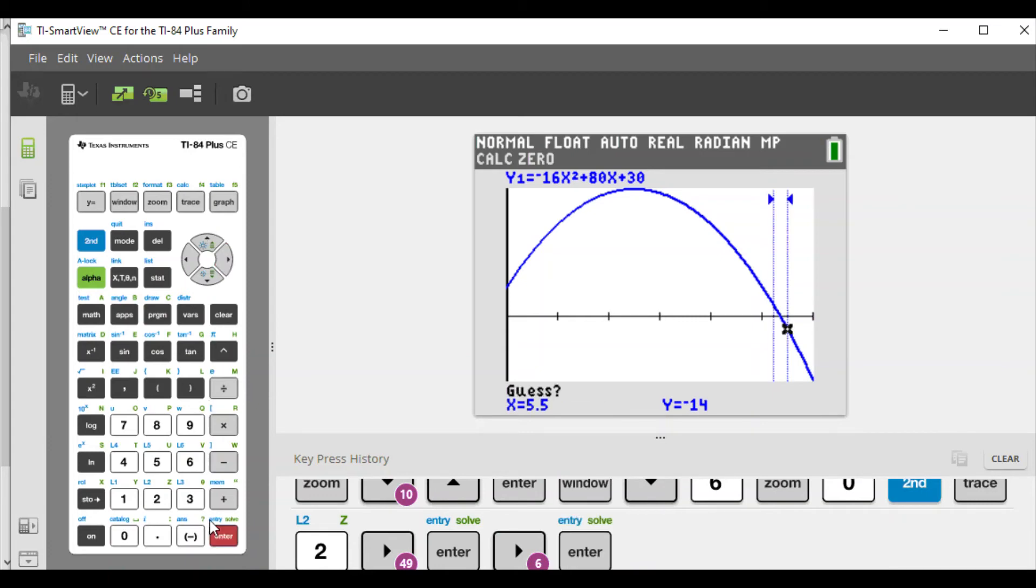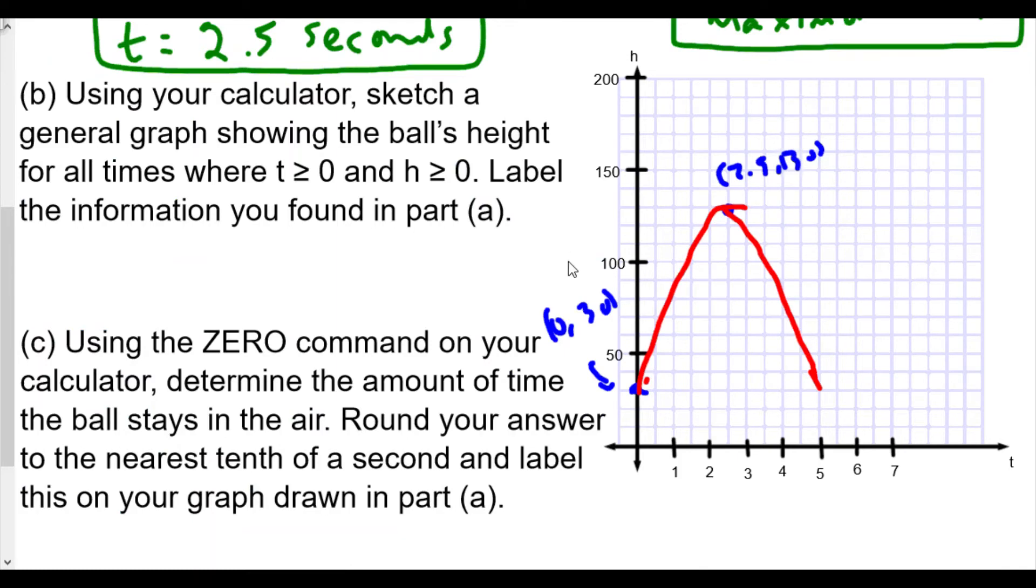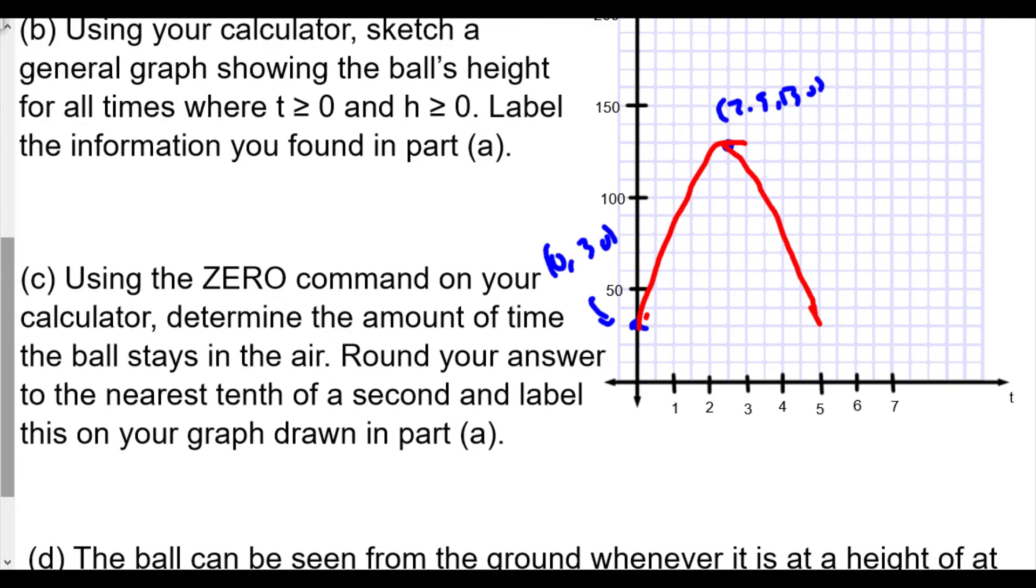We have left side, right side bound, we know the point's in between, enter, and it will guess for us. Our zero occurs at 5.35, 5.350 seconds. It says round to 5.4, so we say about 5.4 seconds. T is approximately 5.4 seconds.